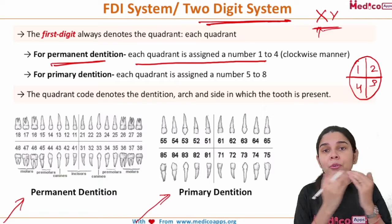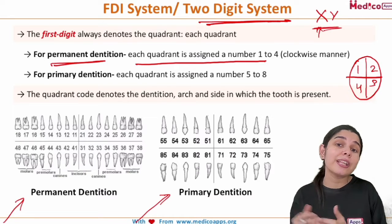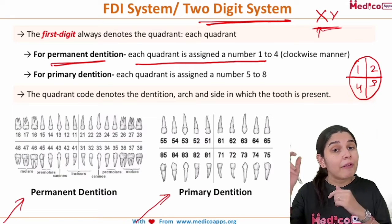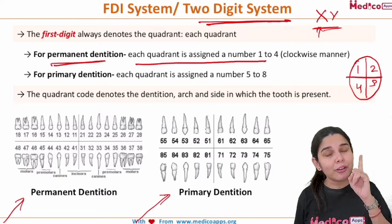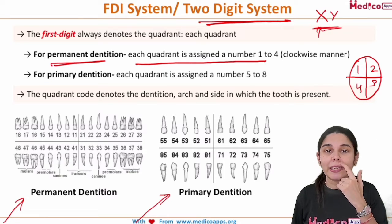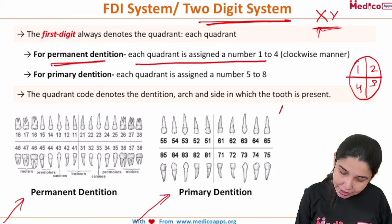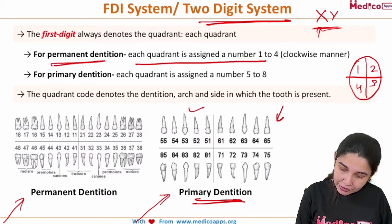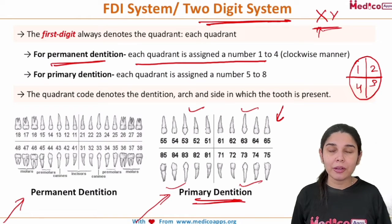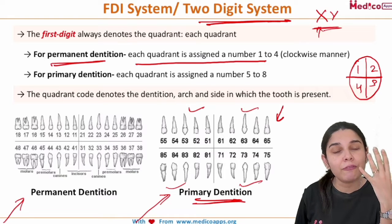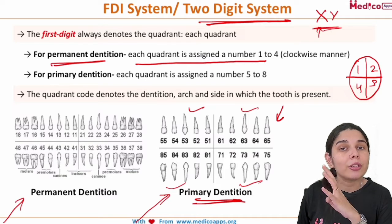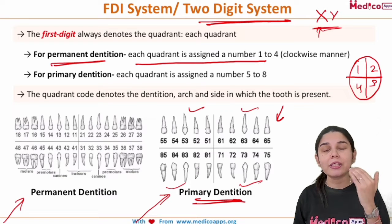For deciduous teeth the same rule follows, with one difference: since we have already used 1 to 4 for permanent dentition, the deciduous quadrants continue from 5 through 8 — that is, 5, 6, 7, 8. So for primary dentition, the first digit of each tooth number will be 5, 6, 7, or 8.